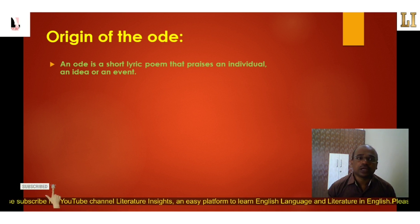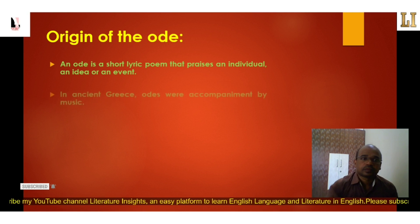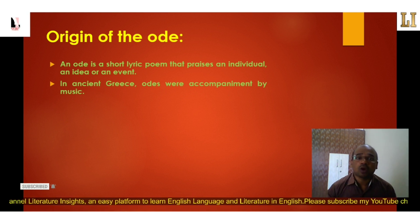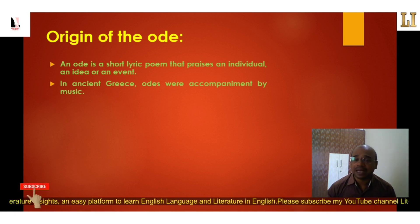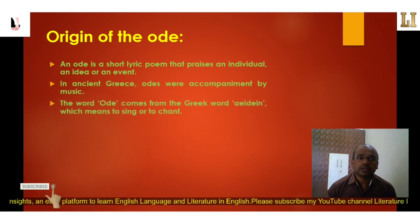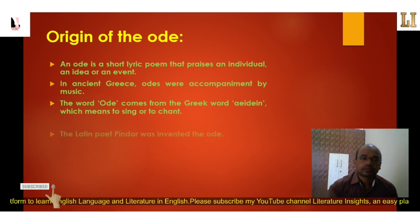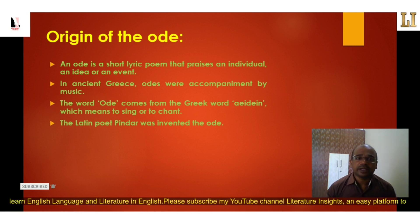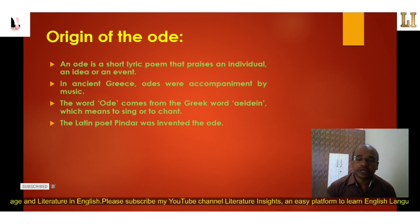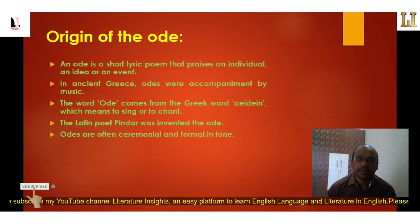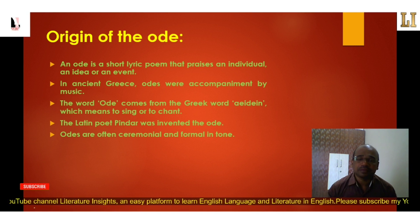An ode is a short lyric poem that praises an individual, an idea, or an event. In ancient Greece, odes were performed or sung with the accompaniment of music and dance. The word 'ode' comes from the Greek word 'adin,' which means to sing or to chant. The poet Pindar is credited with inventing the ode as a poetic form. In English literature, odes are often ceremonial and formal in tone, written to celebrate a public event or occasion, and always deal with high and serious themes in a dignified manner.